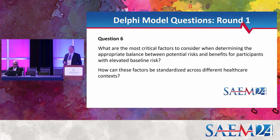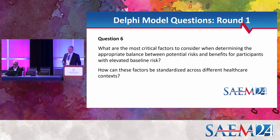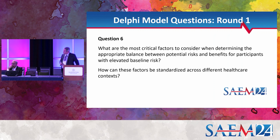Question six: what are the most critical factors to consider when determining the appropriate balance between potential risks and benefits for participants with elevated baseline risk, and how could these factors be standardized across different healthcare contexts? It's a broad question — we're trying to get at what people consider the most critical factors. You're a vulnerable person in a vulnerable situation and someone's talking to you about risks and benefits. The other thought is: does this question need to be here at all? We put in a bunch of questions, but does a working group truly need to answer this one?